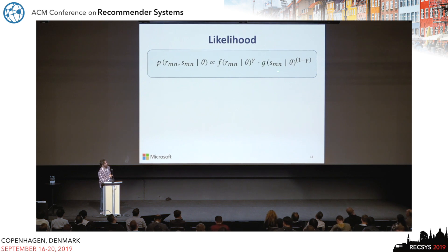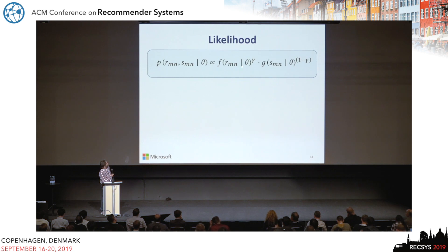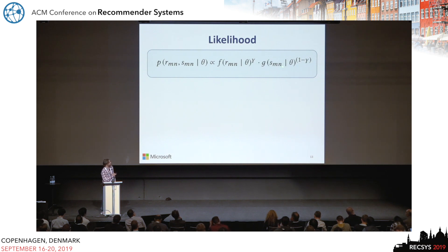We also wanted the ability to control the balance between the two objectives. If businesses say to maximize purchases, we set the gamma scalar to 1 and focus on purchase — like most recommender systems do. If someone asks us to focus on the satisfaction score, we scale gamma to 0 and focus on that component.